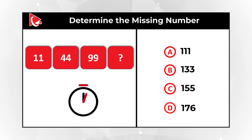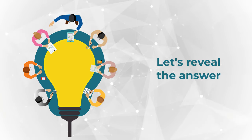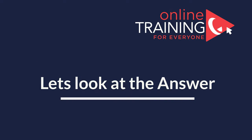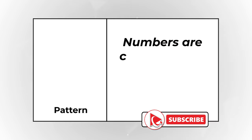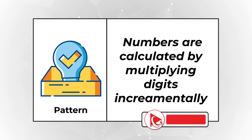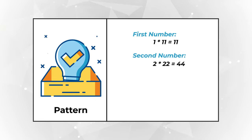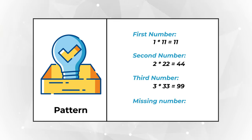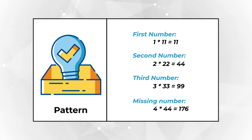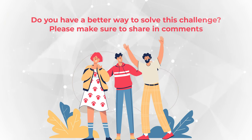Give yourself a little bit of time, maybe pause this video. I am going to move forward and reveal the answer as well as the calculations. The solution for this problem is rather simple — you just need some creativity. Always look for patterns. The way the first three numbers are calculated is by multiplying single digits incrementally: the first number is 1 multiplied by 11, which is 11; the second number is 2 multiplied by 22, which equals 44; the third number is 3 multiplied by 33, which equals 99. So the missing number is 4 multiplied by 44, which equals 176. The correct choice is Choice D: 176.